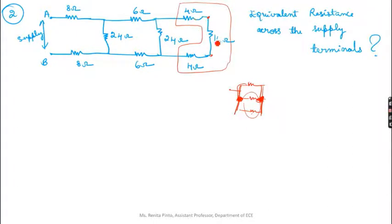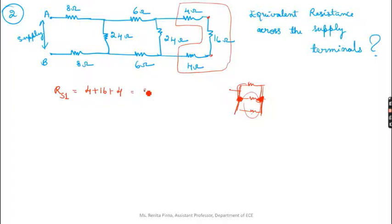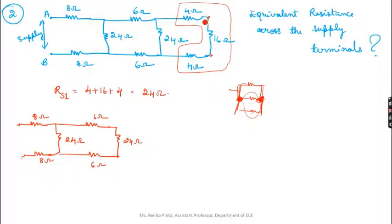Since 4Ω, 16Ω, and 4Ω are all in series, the equivalent resistance RS1 = 4 + 16 + 4 = 24Ω. So now the circuit has this 24Ω branch.